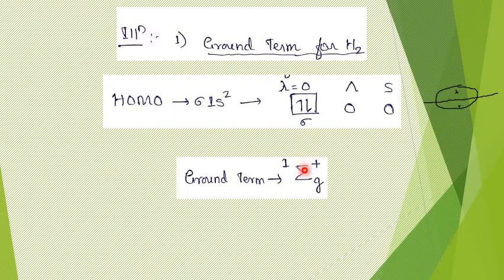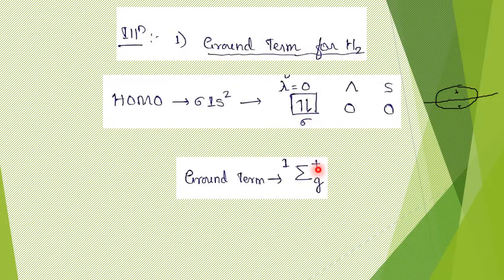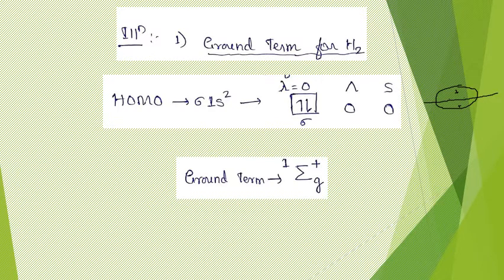Since you have the internuclear axis with plane of symmetry, plus × plus = plus. Therefore the complete term symbol for H₂ is singlet Sigma, subscript G, superscript plus — written as ¹Σg⁺.